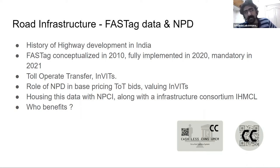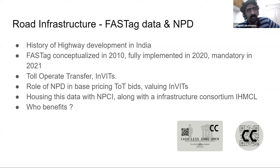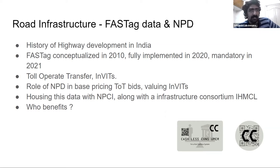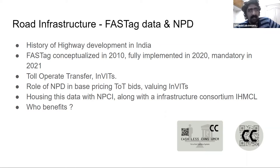How do you value a highway for a 20-year period? One way is to use FASTag data and run projections. The other model is InVITs, where a set of highways is transitioned into a trust that issues Infrastructure Investment Trust units — like a mutual fund — and people can buy InVITs off the market. Again, the role of NPD here is largely around pricing these TOT and InVIT bids. Currently this data is housed with NPCI, implementing the FASTag NETC project along with infrastructure consortium IHMCL — these are the data trustees of this dataset.